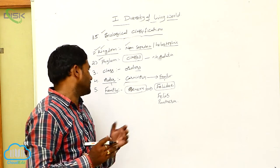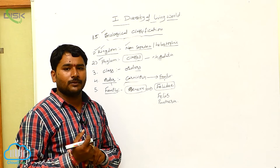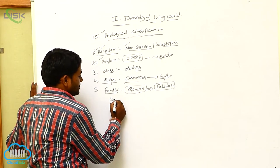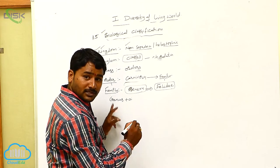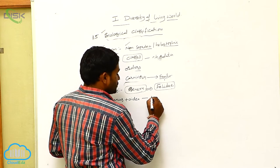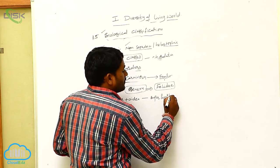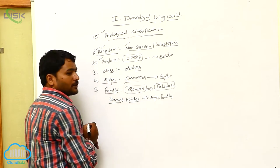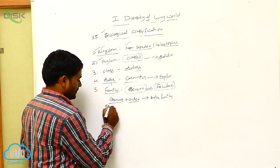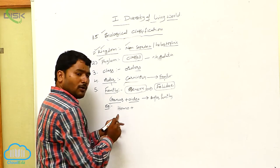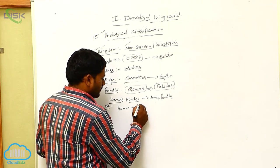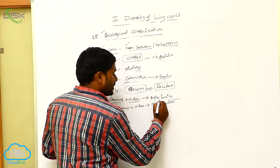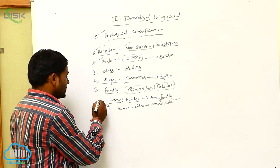Let us see how we can identify a family name, sub-family name. Generally, one genus plus the suffix '-oidea' gives you the super-family. For example, Homo is the genus of human beings. Homo plus '-oidea' gives you Hominoidea — the super-family of man.